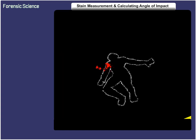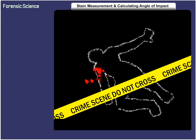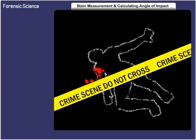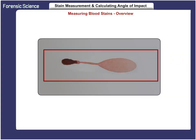Welcome to this learning object: Stain Measurement and Calculating Angle of Impact. The process of measuring a blood stain and determining its angle of impact uses trigonometry's sine function. Because a mathematical relationship exists between the width and length of an elliptically shaped blood stain, it is possible to calculate the angle of impact for the original drop of blood.